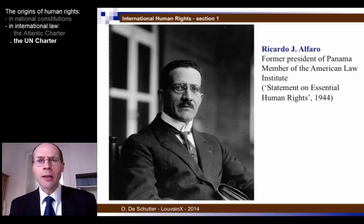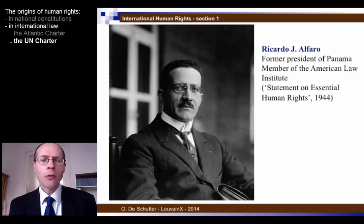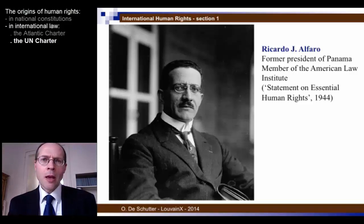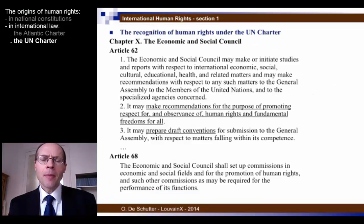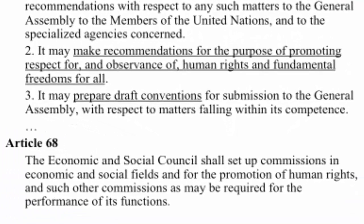That proposal was ultimately not successful, in part because delegates felt it would be too divisive and a diversion, and they wanted to finalize the UN Charter sooner rather than later. What was decided is that the definition of human rights would be the first task of the UN once the Charter entered into force. The Charter establishes an Economic and Social Council tasked to make recommendations promoting respect for human rights and fundamental freedoms, and to prepare draft conventions for the General Assembly to approve.